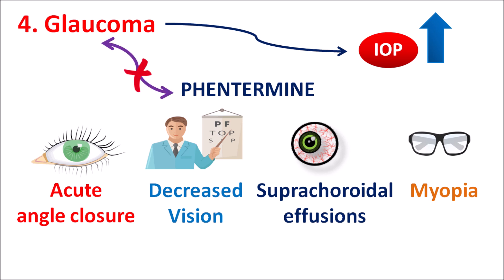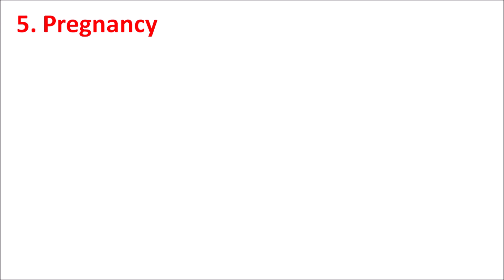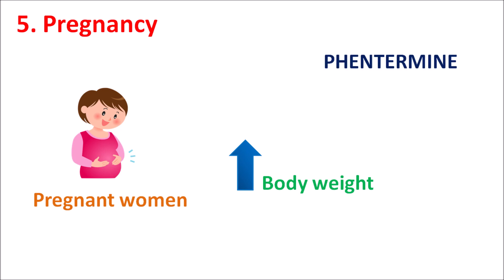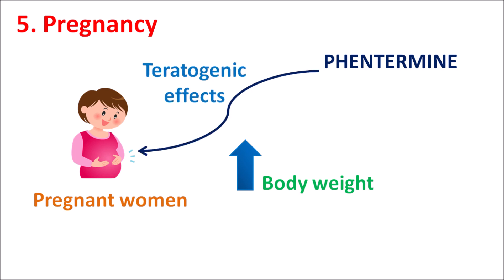The fifth contraindication is pregnancy. In pregnant women, various maternal changes occur including increased body weight, which is essential. However, if the woman was already obese before pregnancy, the weight gain may lead to systemic complications. Even so, phentermine should not be used because it can produce teratogenic effects, so in pregnant women this drug is strictly contraindicated.